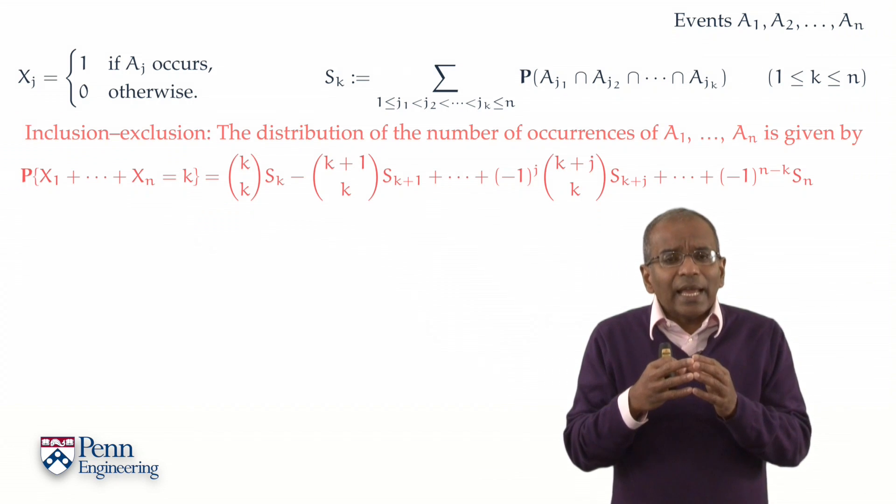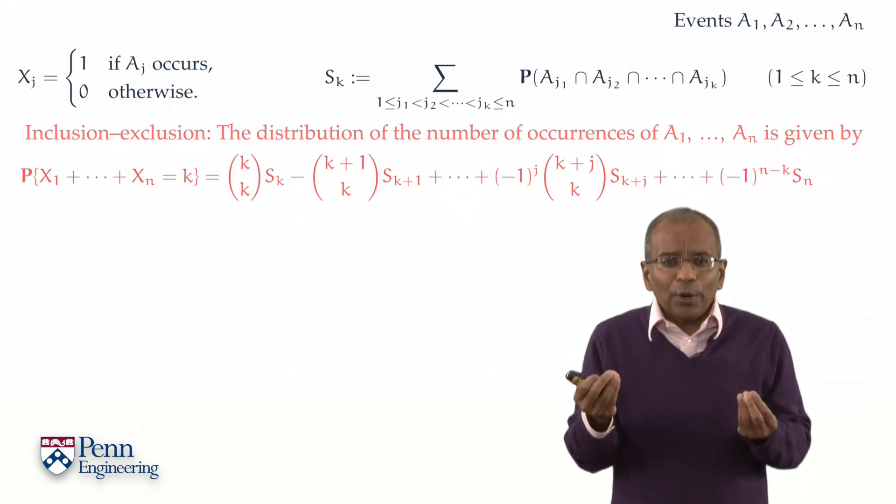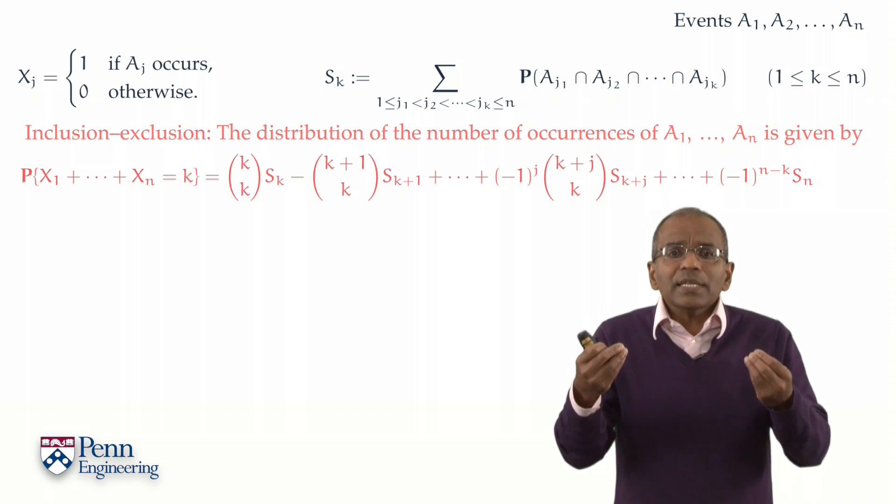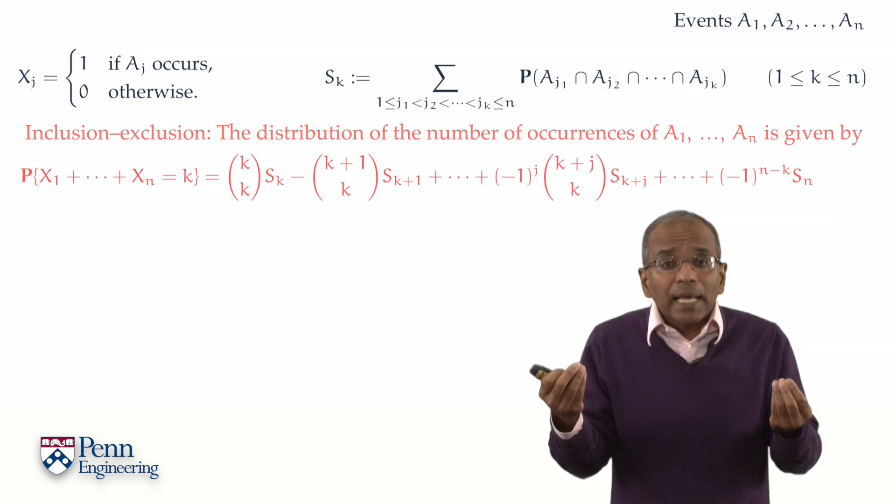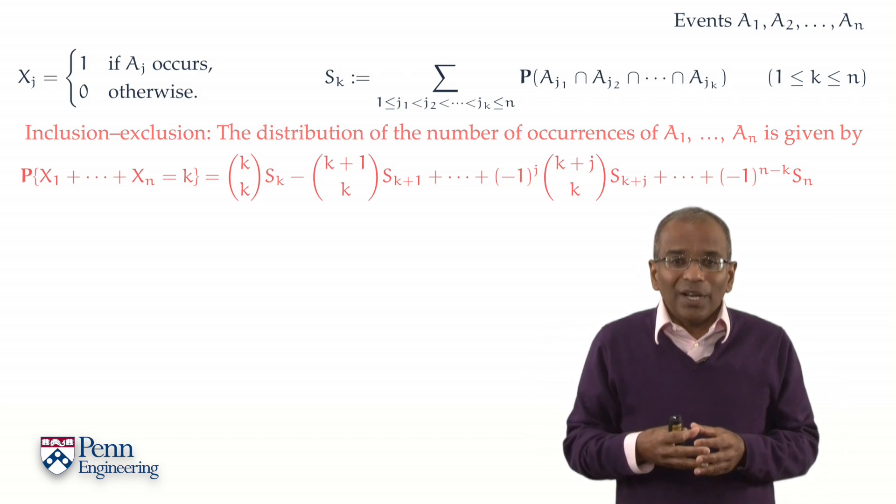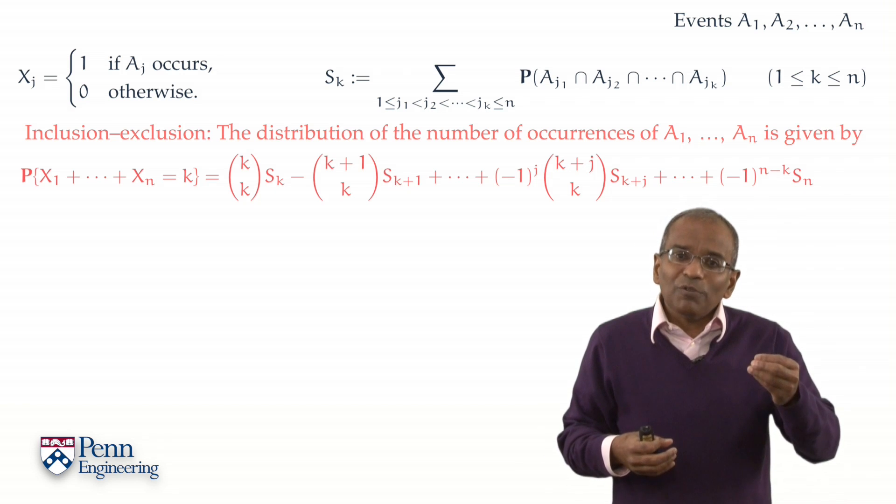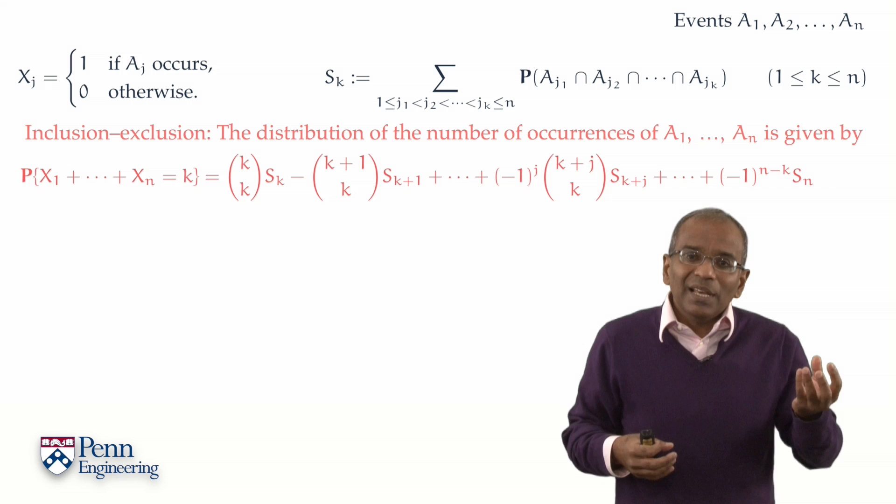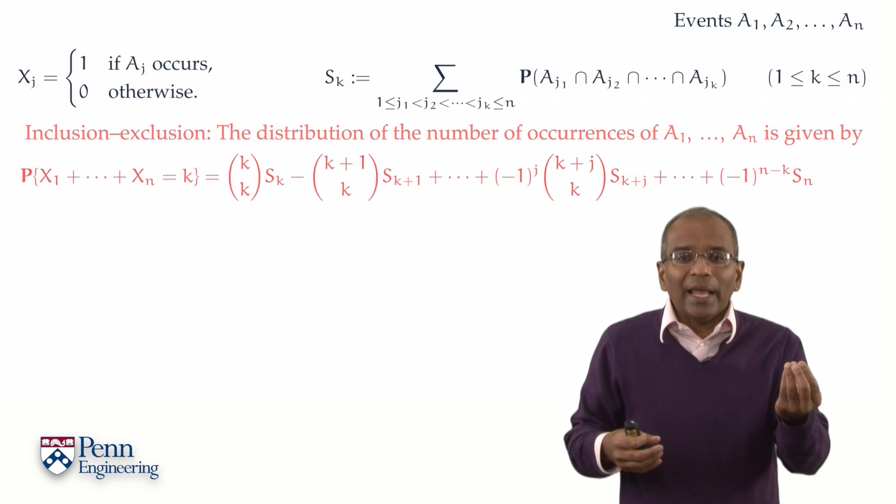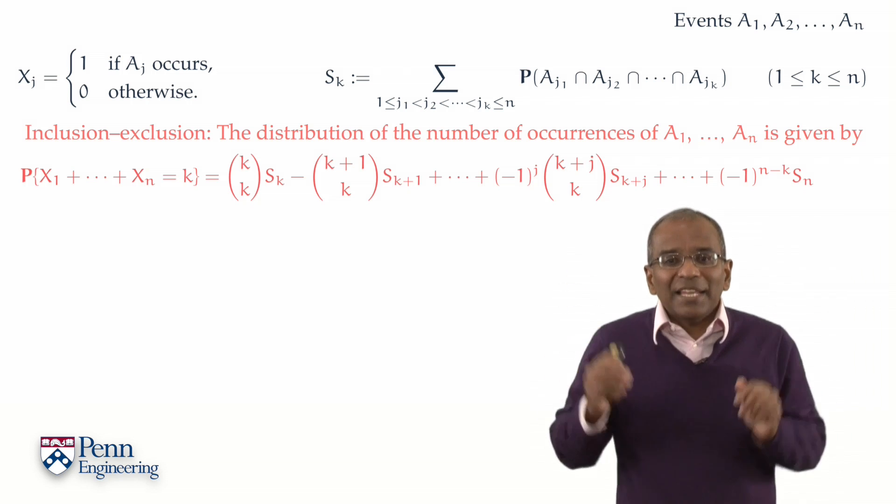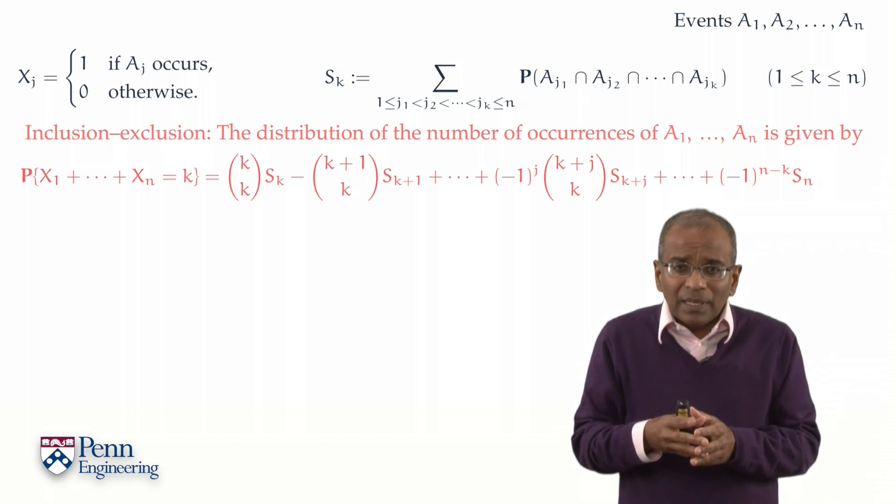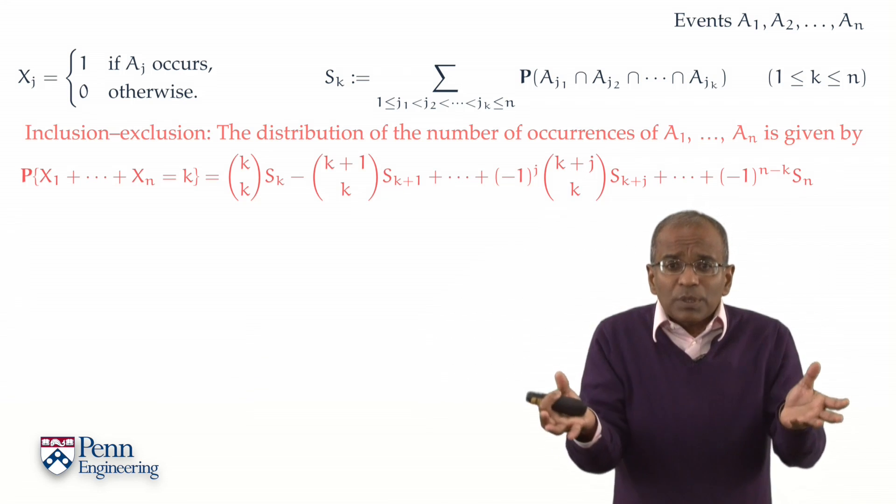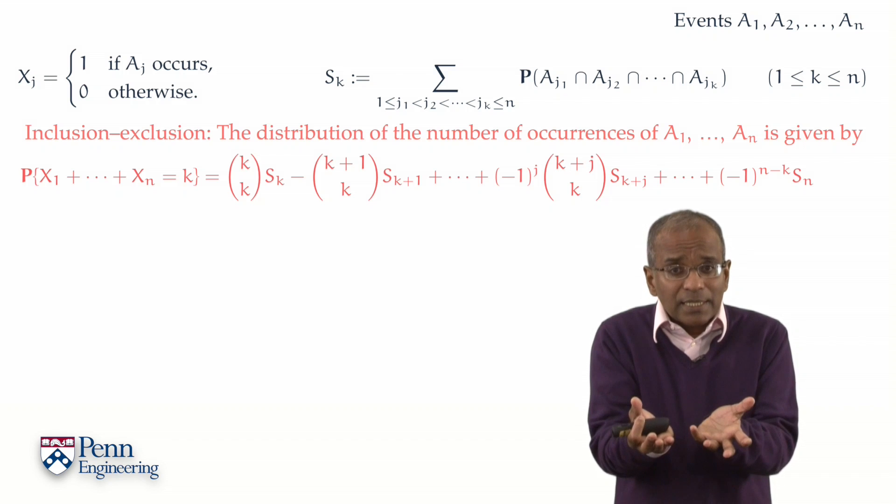Now, in the case when k was zero, then we are targeting the question, the problem, of what is the probability that none of these events occur? And you will recall from our context in sieves, if these events A1 through An reflect bad events, then we are asking what is the probability of the occurrence of something bad?